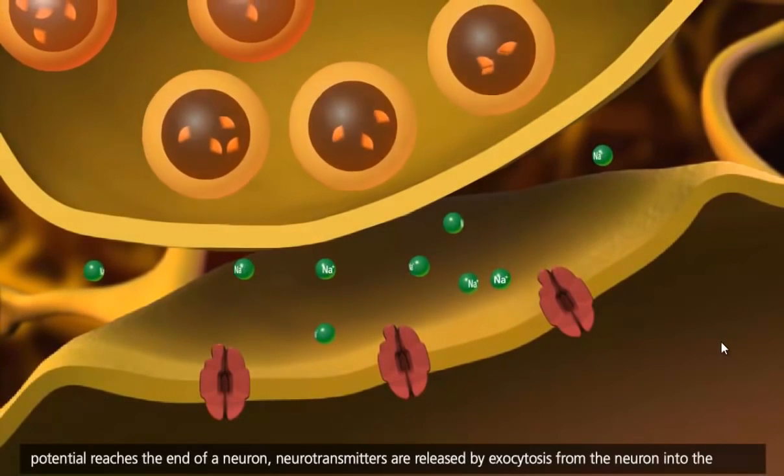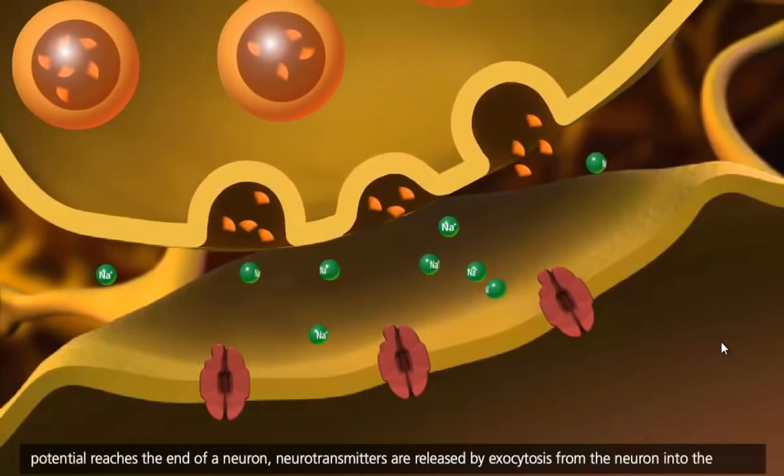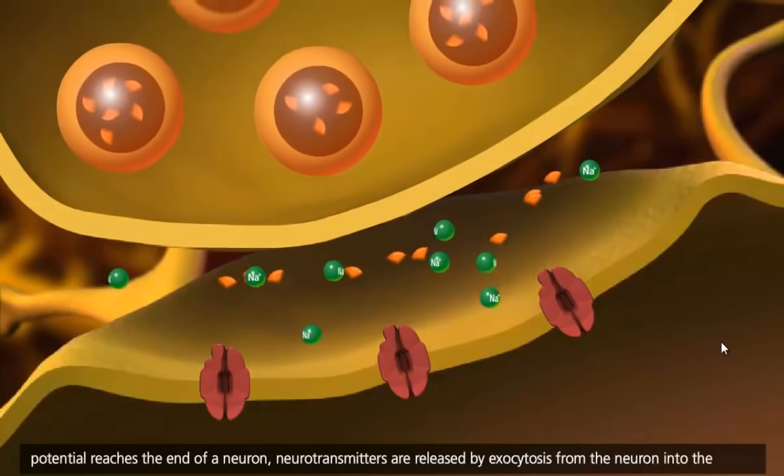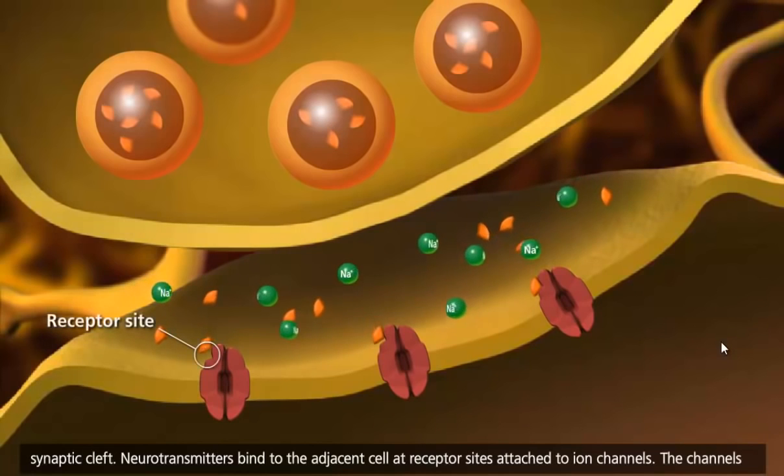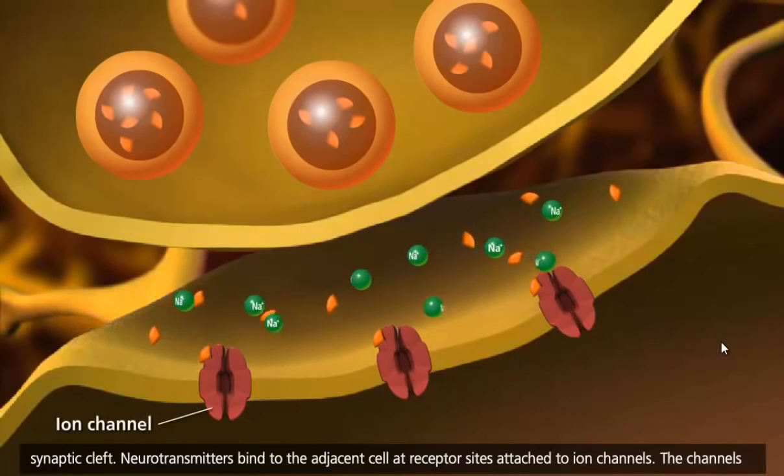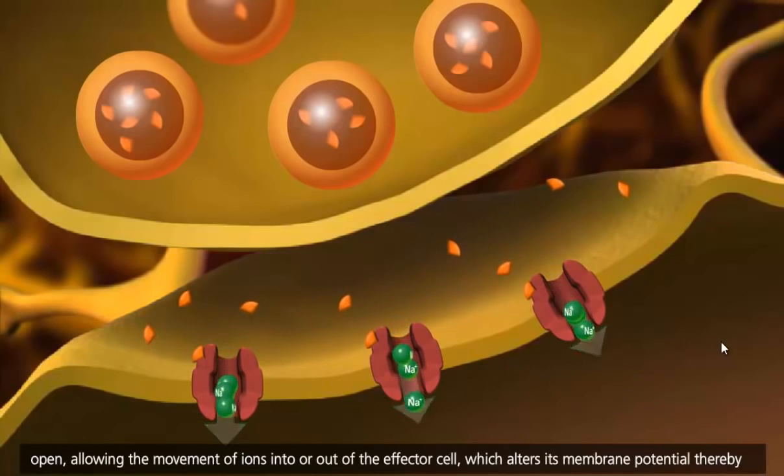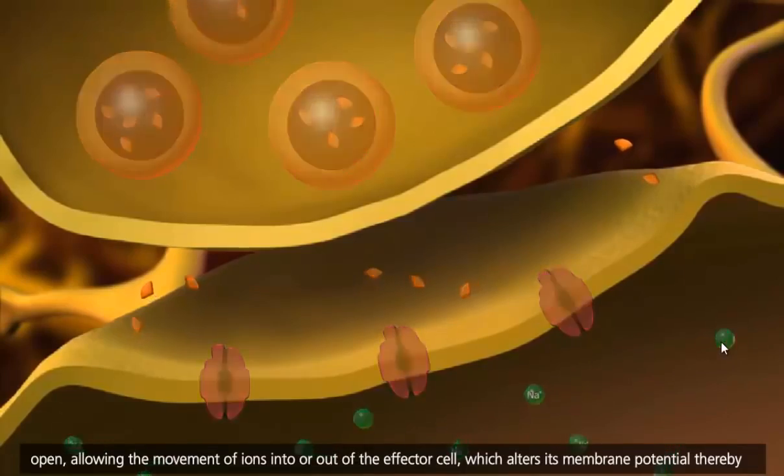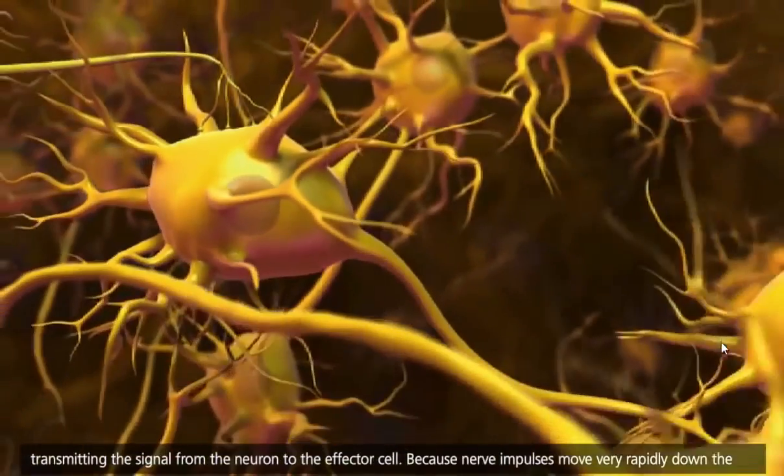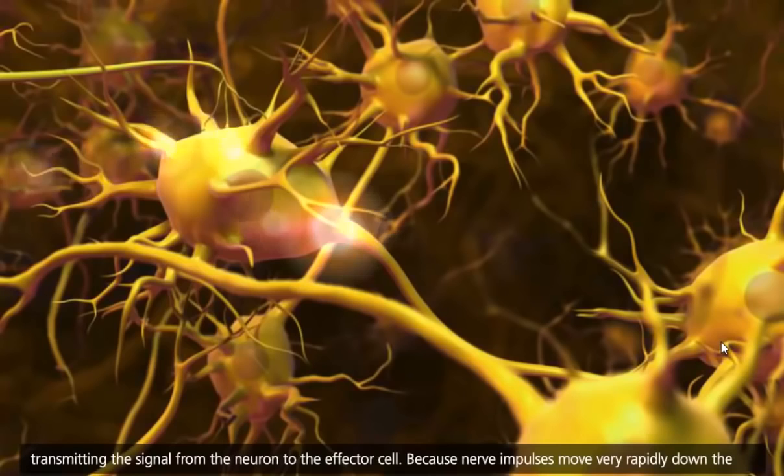When an action potential reaches the end of a neuron, neurotransmitters are released by exocytosis from the neuron into the synaptic cleft. Neurotransmitters bind to the adjacent cell at receptor sites attached to ion channels. The channels open, allowing the movement of ions into or out of the effector cell, which alters its membrane potential, thereby transmitting the signal from the neuron to the effector cell.